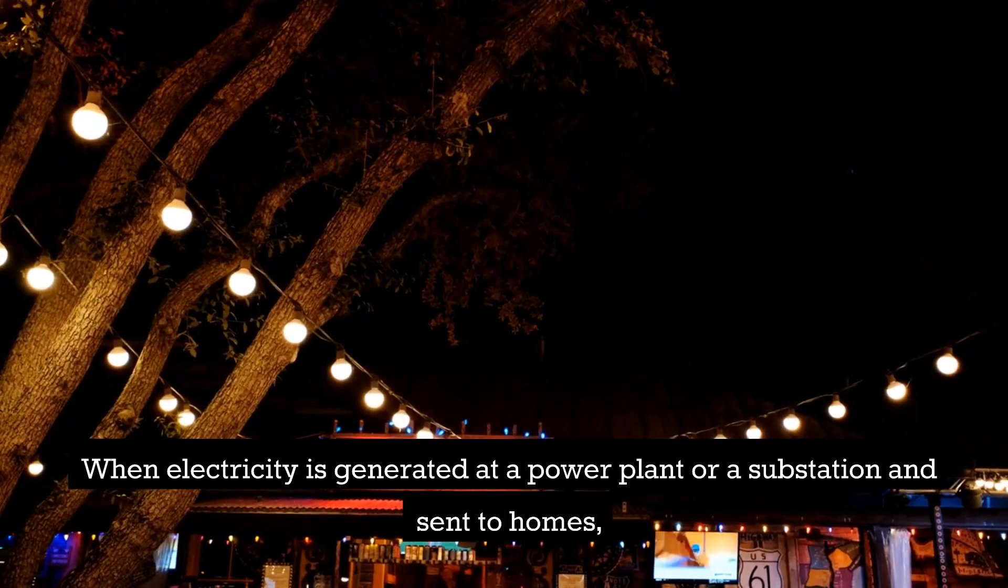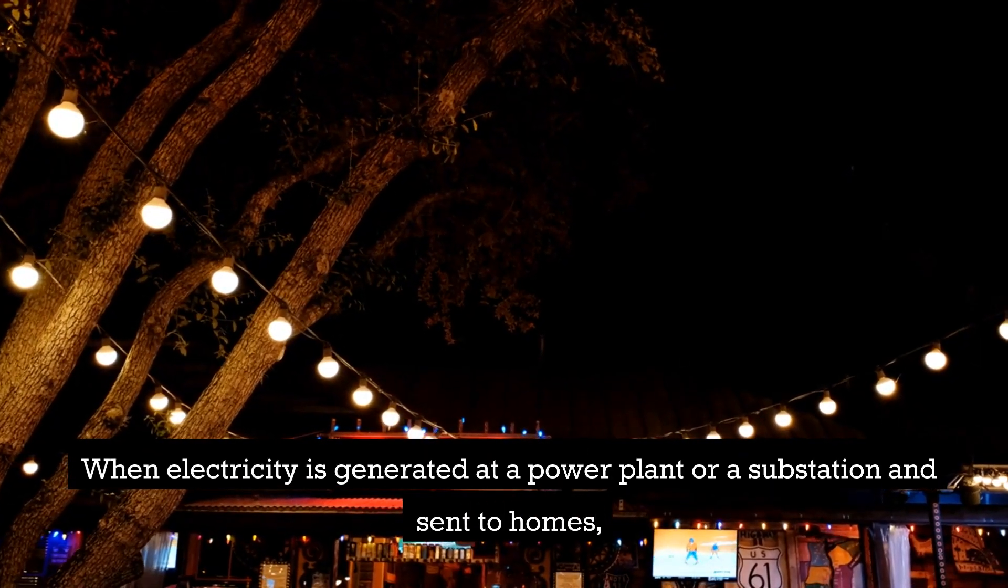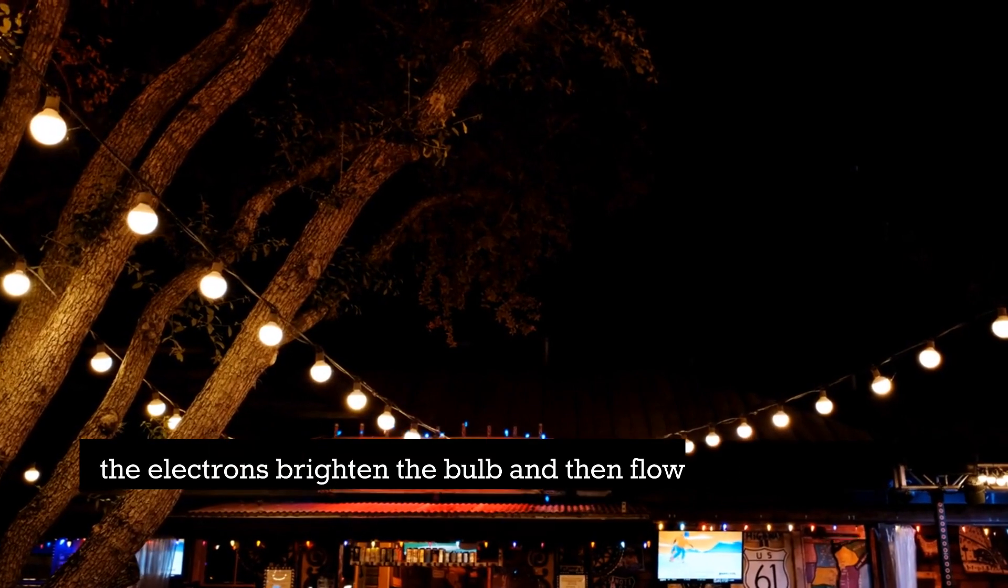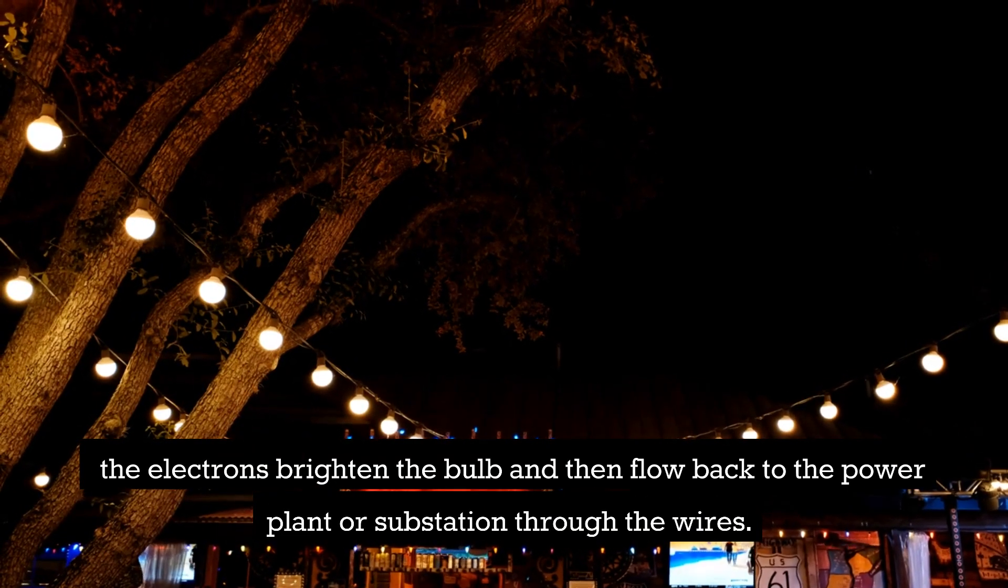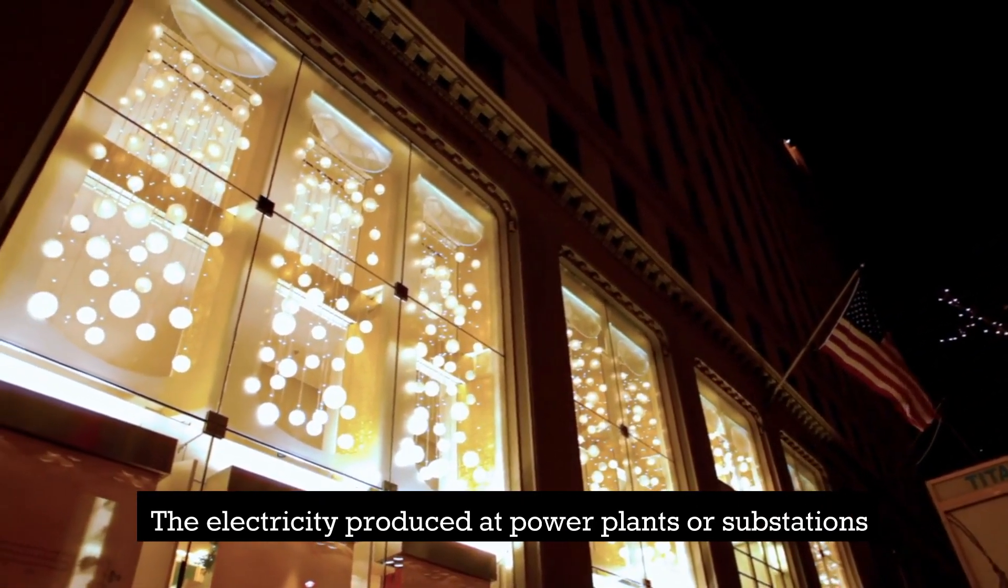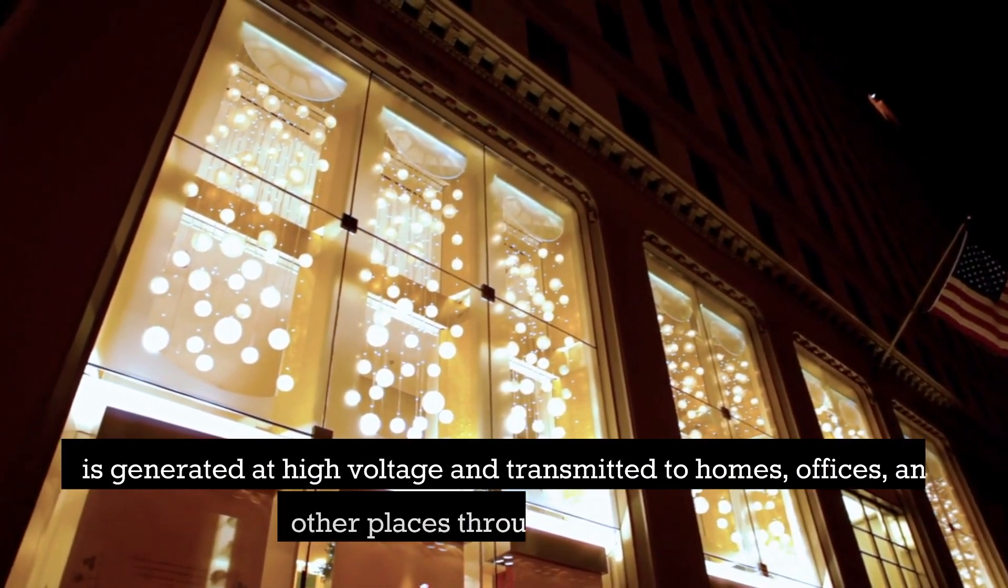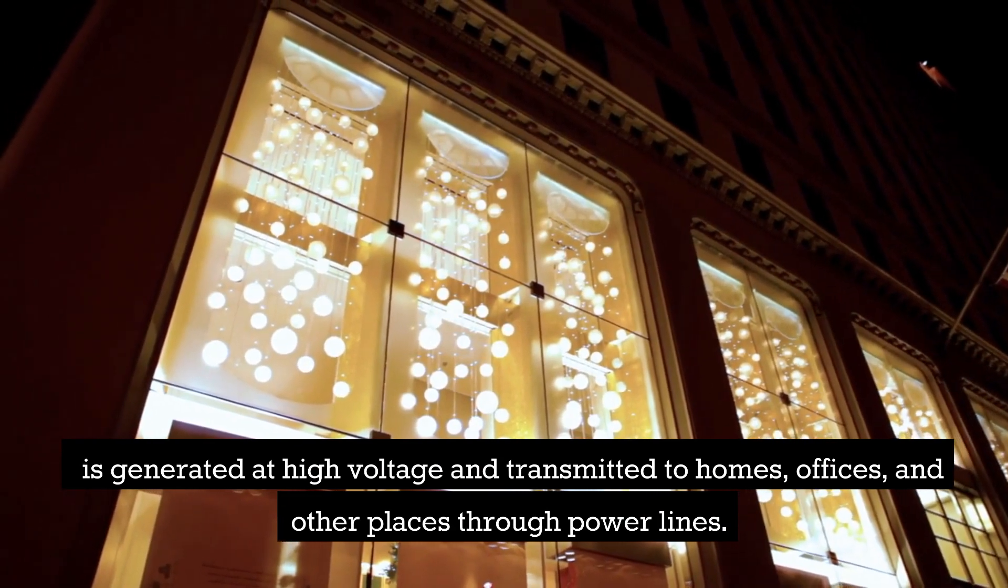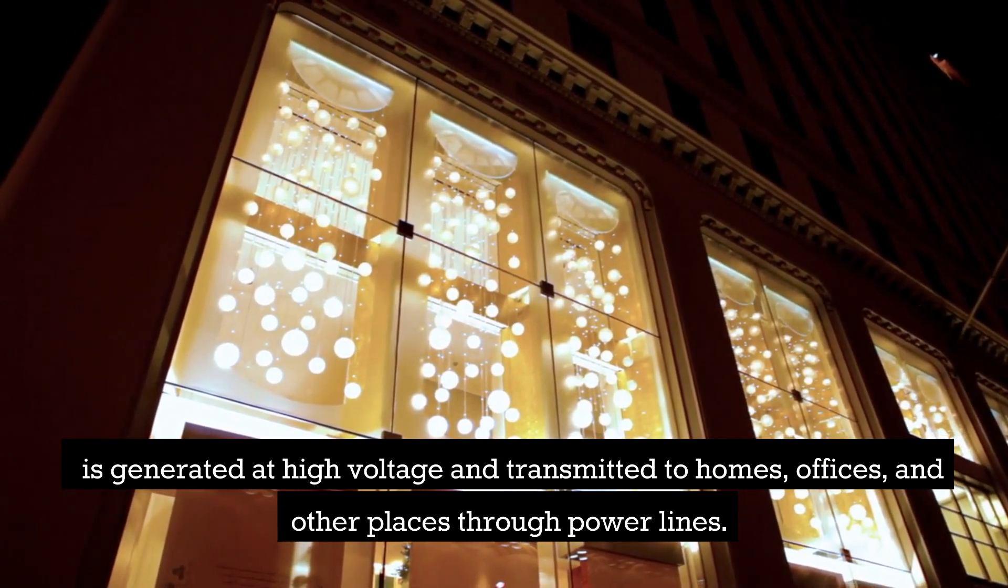When electricity is generated at a power plant or a substation and sent to homes, the electrons brighten the bulb and then flow back to the power plant or substation through the wires. The electricity produced at power plants or substations is generated at high voltage and transmitted to homes, offices, and other places through power lines.